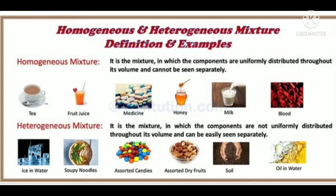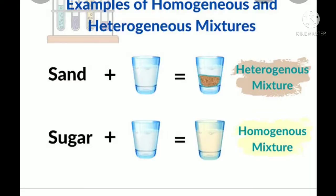What difference can you see in both the glasses? What is one of the components in both the mixtures? It acts as solvent in both. In the first case, the salt — that is the solute — completely dissolves in water. After that, you cannot differentiate salt and water separately, and physically you cannot separate salt from water. Whereas in the second example, sand in water can be separated by the technique of filtration.